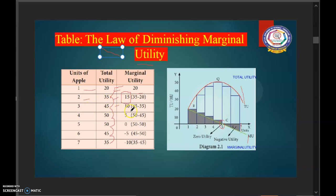So, again when he consumed fourth apple, it was 50. So, 50 minus 45, 5. So, his utility is decreasing 20, 15, 10, 5 like that.